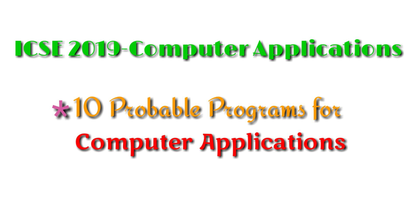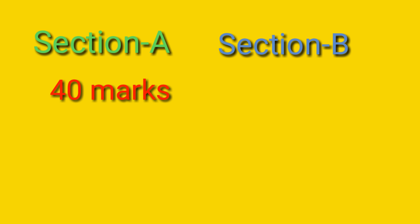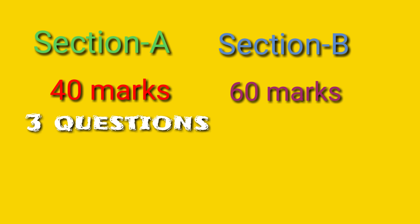Before starting with this, I would like to explain the pattern of the question paper. There are two sections, Section A and Section B. Section A consists of 40 marks and Section B consists of 60 marks. In your Section A you get three questions: first and second question comprises of 10 marks each and the third question comprises of 20 marks.